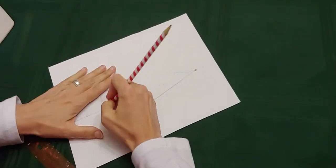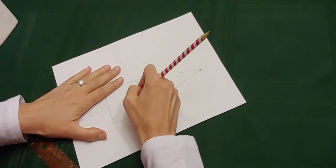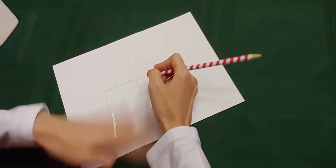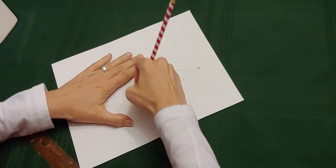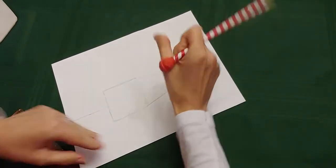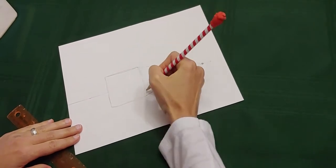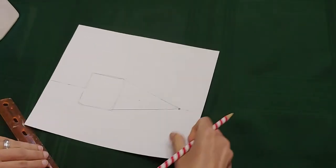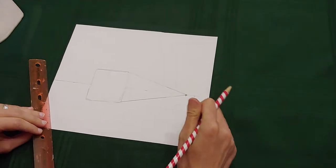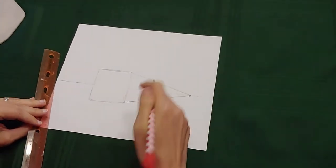And you can erase this part because that part of the cube is going to be in front and you would not have it being behind the vanishing line, or the horizon line, excuse me.